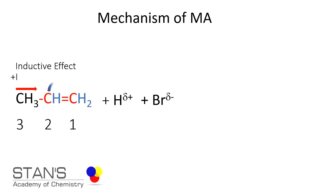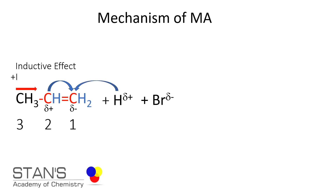So, the electron from the second carbon atom is pushed onto the first carbon atom, making it slightly negative. Consequently, the second carbon atom becomes slightly positive. If you look at the double bond, we have a delta negative on the first carbon and a delta positive on the second, which makes it easy to explain where hydrogen and bromide ions go in the addition reaction. The hydrogen atom seeks the first carbon atom, which is slightly negative, converting that group into a CH3 group. In the process, carbon atom number two now carries a slightly positive charge.